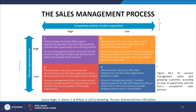In cell 4, where both account opportunity level and competitive position of the sales organization are low, accounts offer little opportunity and the sales organization position is weak. Account management policy: consider replacing personal calls with telephone sales or direct mail to service accounts, and consider dropping the account if unprofitable.